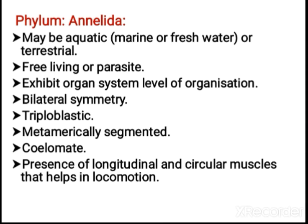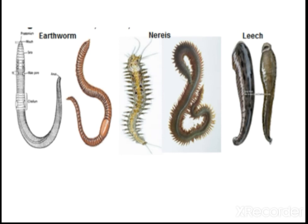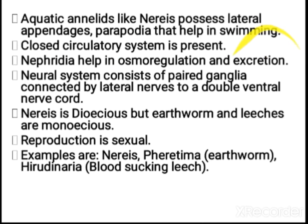They possess longitudinal and circular muscles, which are helpful for locomotion of the earthworm. You must have observed how the earthworm moves — most of the annelids have this type of muscles. Through contraction and relaxation, the earthworm is able to move. Here we can see earthworm, Nereis, and leech.